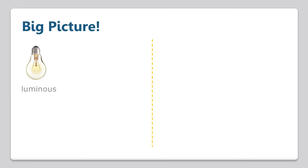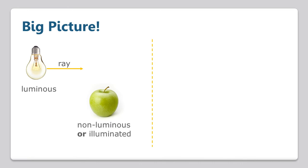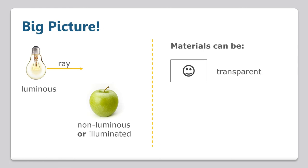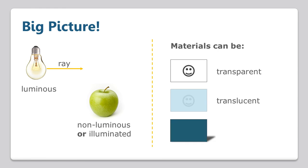And here is the big picture for this lesson. Luminous sources emit light and light follows a straight path called a ray. Objects that do not emit light are called non-luminous, but can be seen when illuminated. Light can interact with materials in different ways. If light is allowed to pass straight through, we call it transparent. If some light is blocked but some is allowed to go through, it's translucent. And if the material blocks most or all light, then it is opaque. And opaque materials are the ones that cast shadows. Thank you for watching.